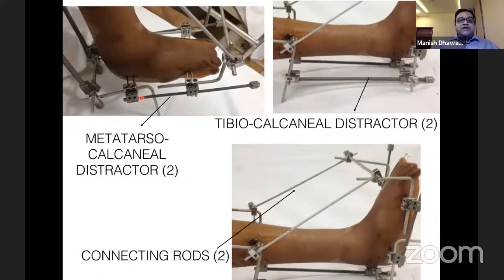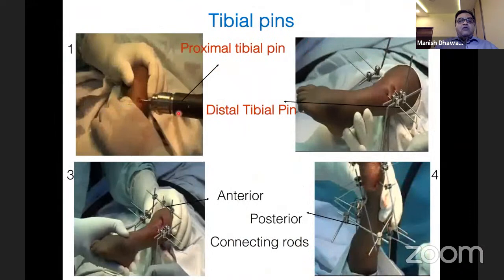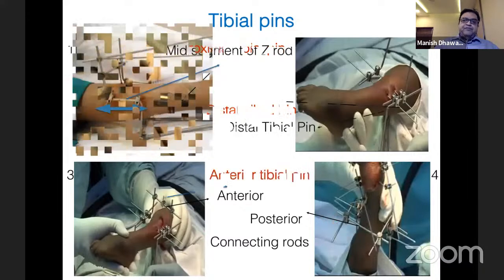The assembly has distractors on the lateral and medial sides of the foot: metatarsal-calcaneal distractors on the foot side and two tibial-calcaneal distractors posteriorly. There is a connecting rod in front which prevents crushing of the talus during correction. The first tibial wire is placed a finger breadth below the tibial tuberosity from lateral to medial horizontally. Wires are tightened by pre-stressing — converging the ends and tightening the link joint — to prevent loosening.